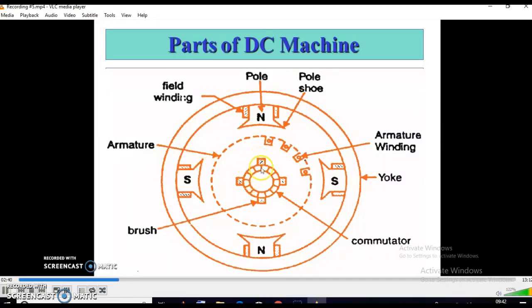This is the commutator, made by copper. These are the commutator segments, which are insulated by mica. This is the brush, generally made by graphite or carbon graphite.